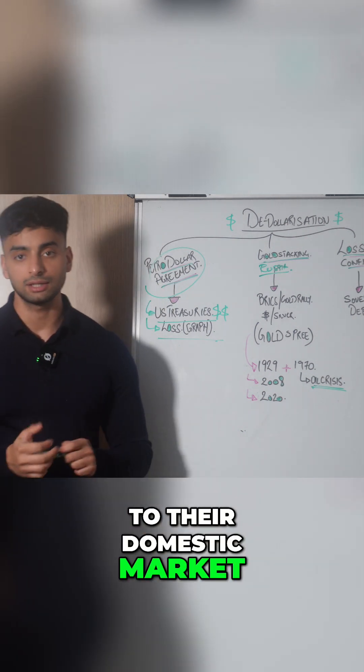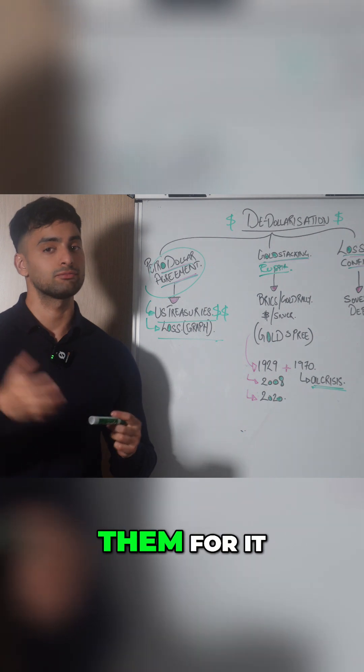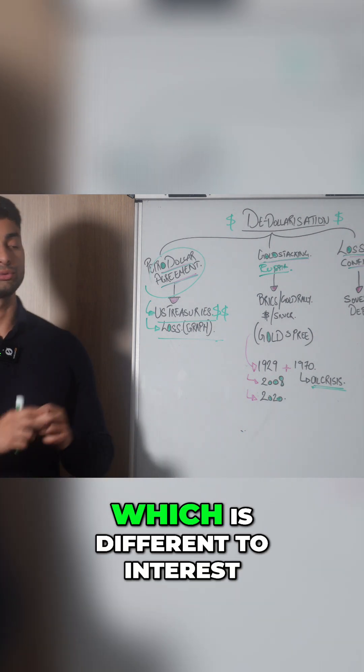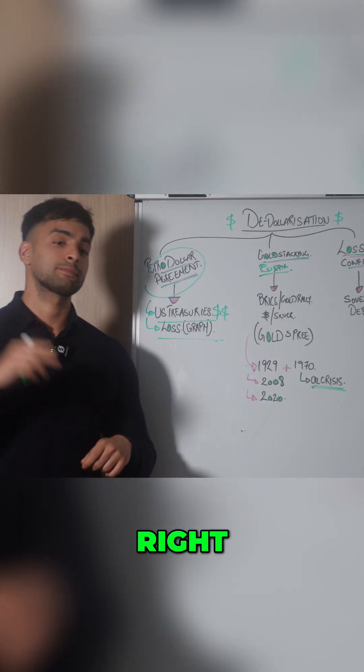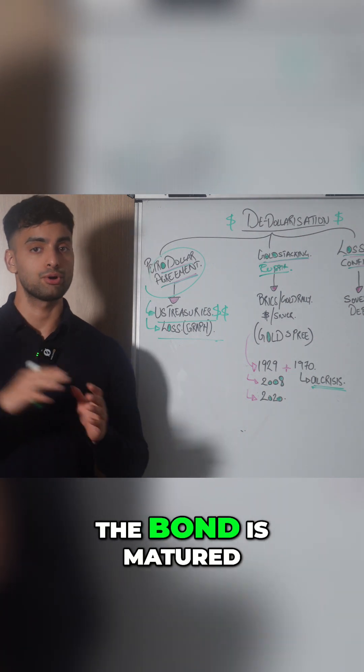They issue to their domestic market so that people can buy and pay for it, and then they get a certain amount of yield, which is different to interest, over a certain period of time when the bond is matured, when the U.S. treasury is matured.